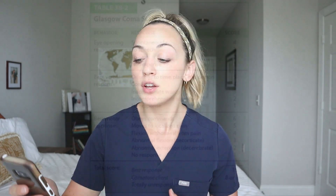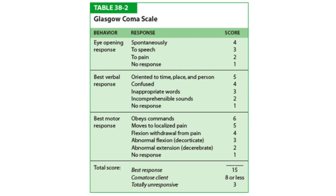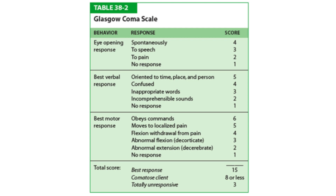In this table I am putting on the screen, you can see how you measure the Glasgow Coma Scale. Starting at the top, it starts with behavior. Eye-opening response: are they spontaneous? Is it to speech? Are they opening their eyes to pain, or are they non-responsive? The higher the score, the better they are. The best verbal response would be oriented to time, place, and person. Are they confused? Are they saying inappropriate words? As the numbers go down, the worse they are.